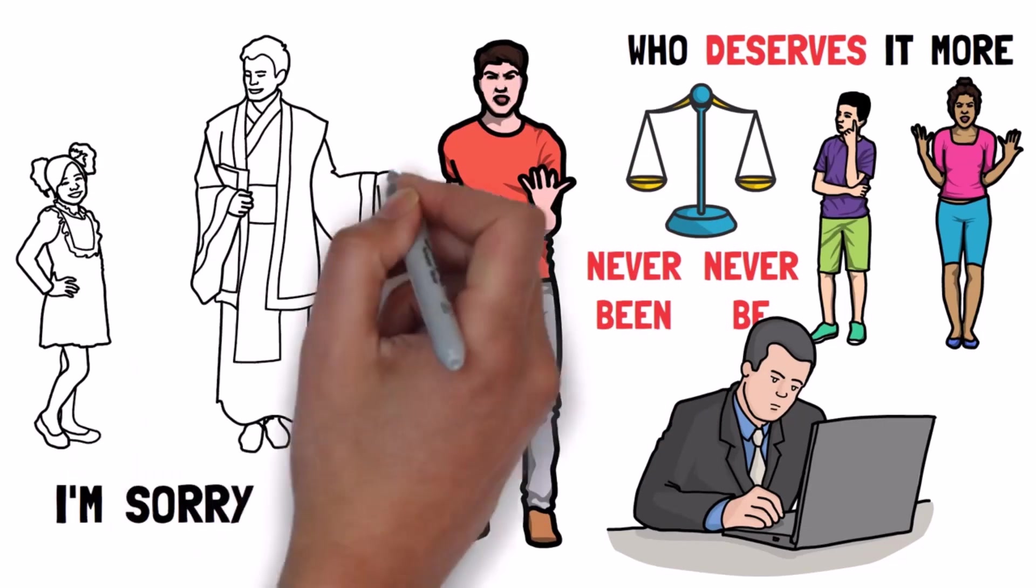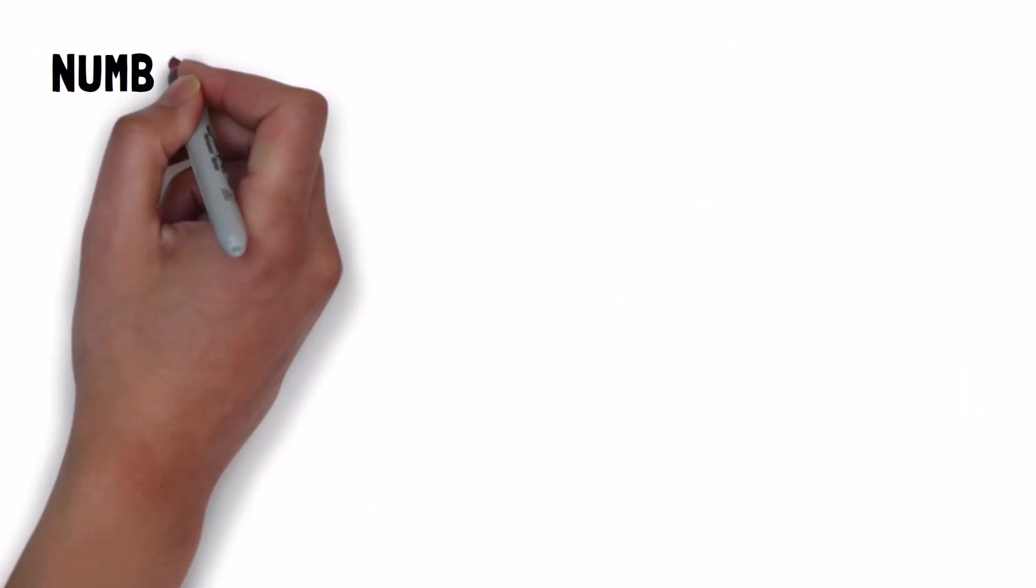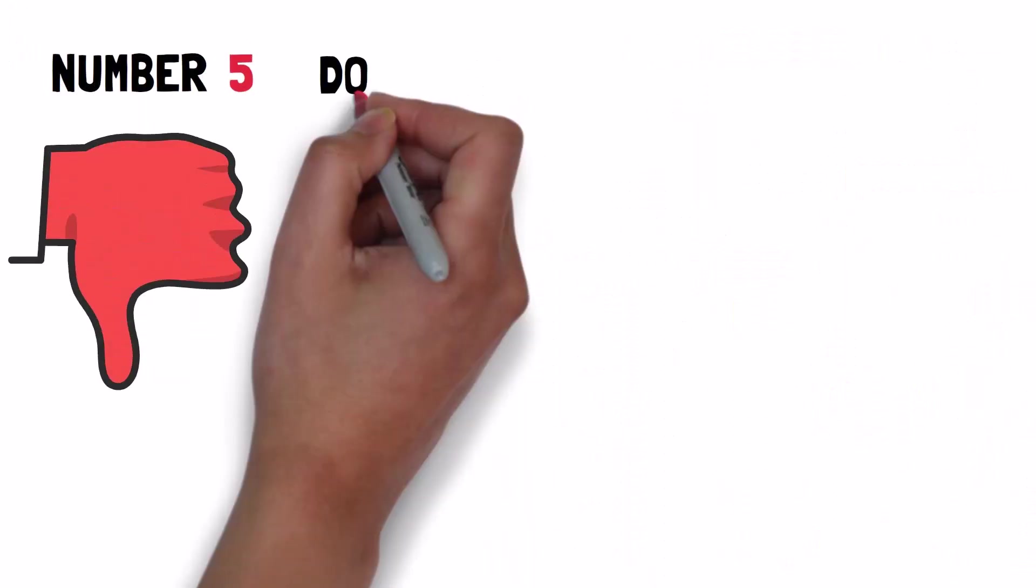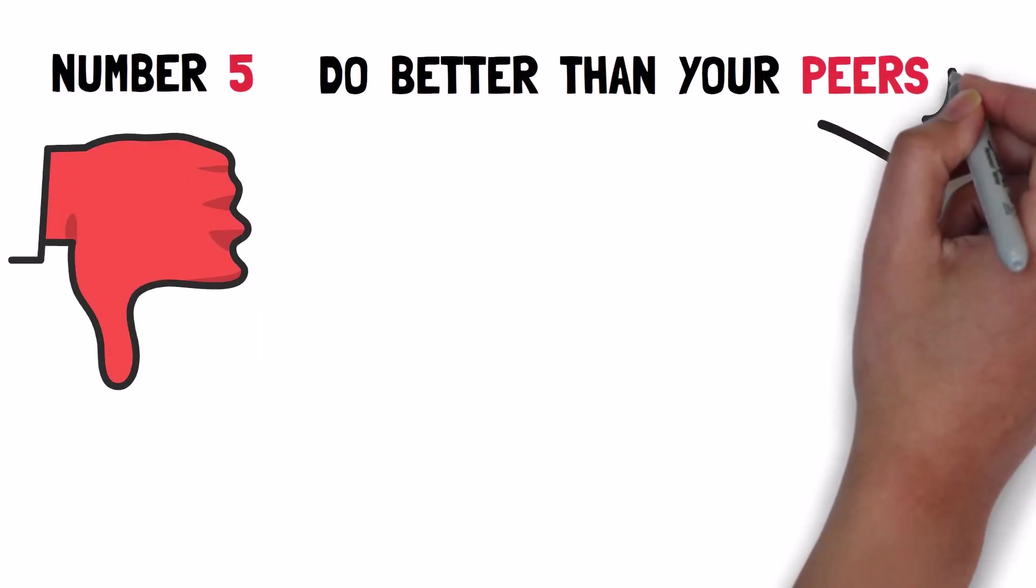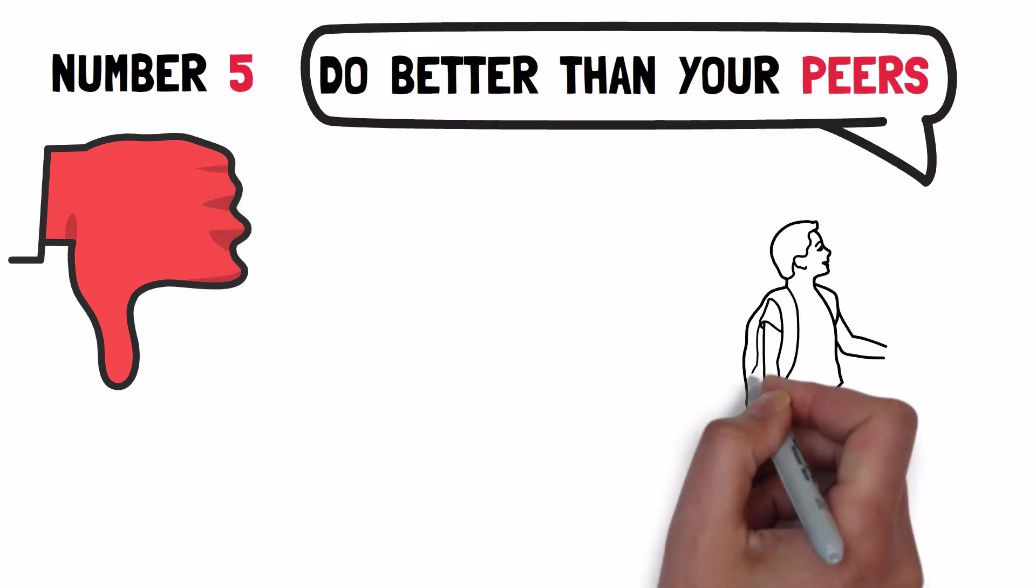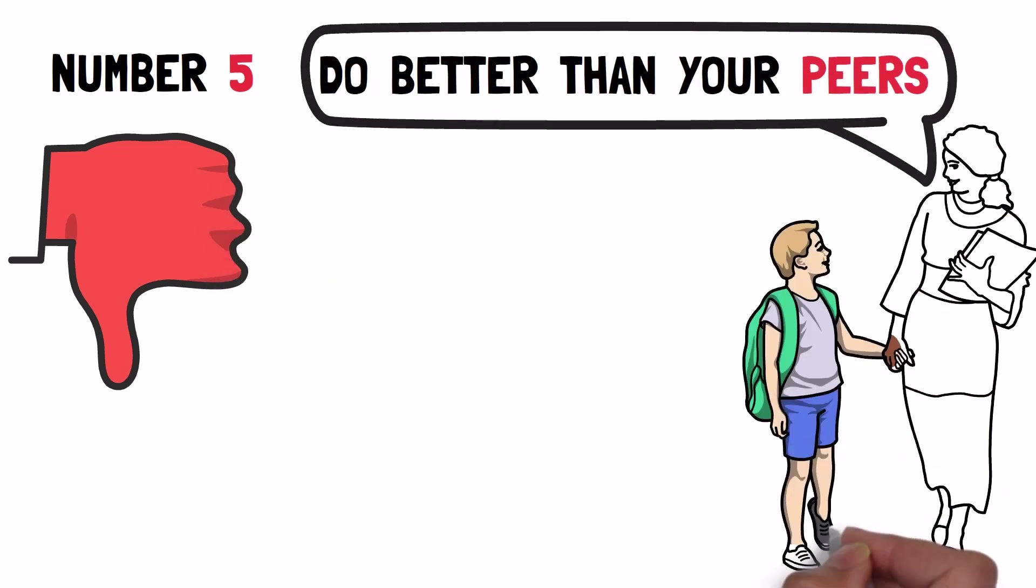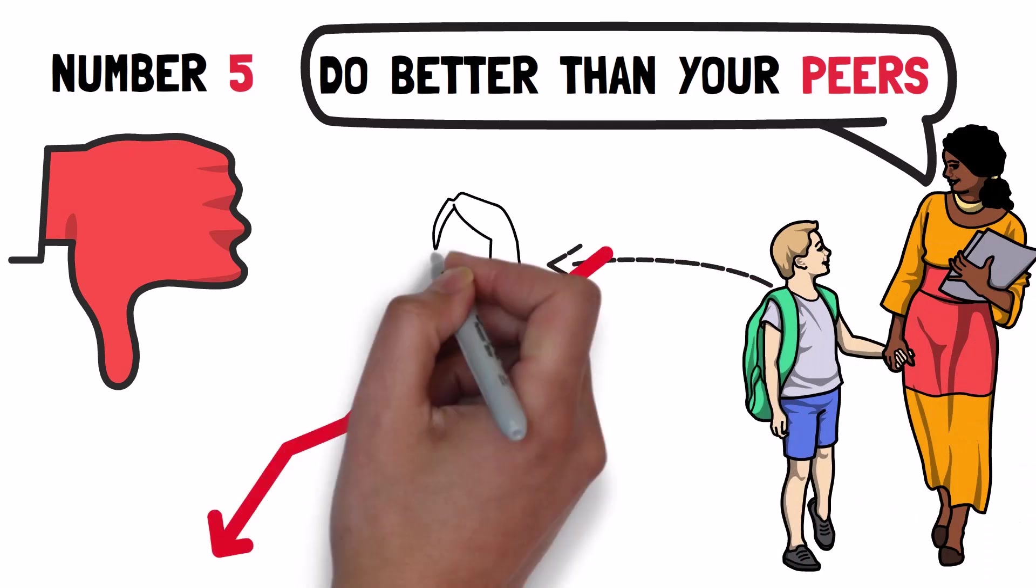Sorry that your parents lied to you. Here we are at number five, one of the worst ones. Do better than your peers. This is probably one of the worst pieces of advice parents often give their children, and it slowly leads them to financial misery.